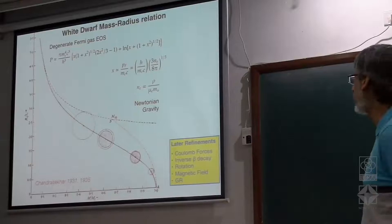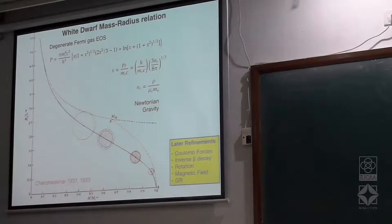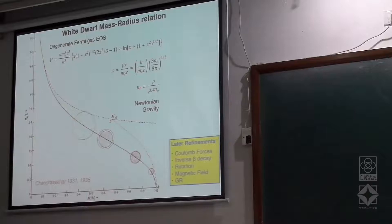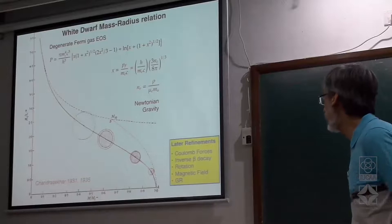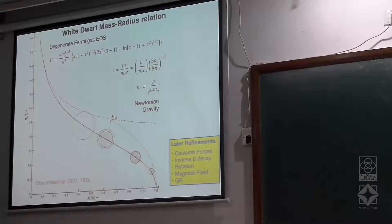In white dwarfs, even if electrons go relativistic you still continue to use this expression for the relation between rho and n, which does not change depending on n. But if you go to neutron degeneracy, you cannot write it so simply anymore — n will be rho divided by gamma times the neutron mass, but gamma is the Lorentz factor that must be computed from number density, making the relation itself depend on n.